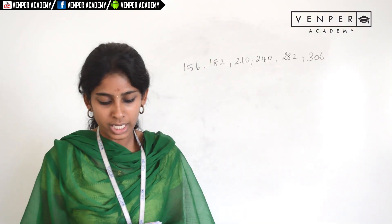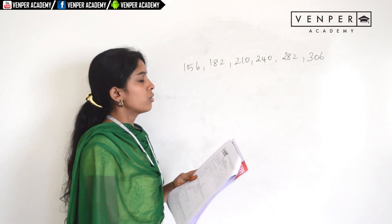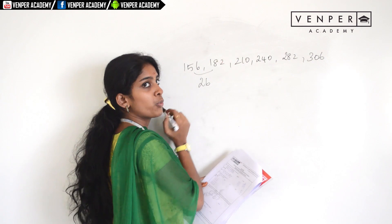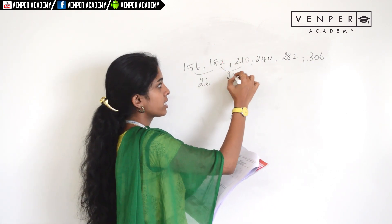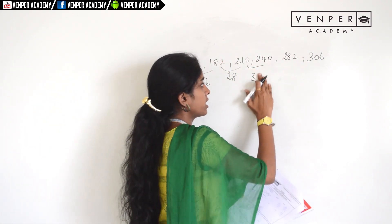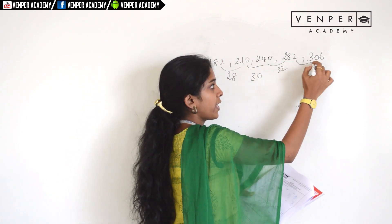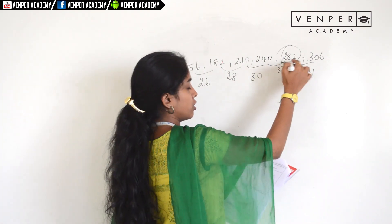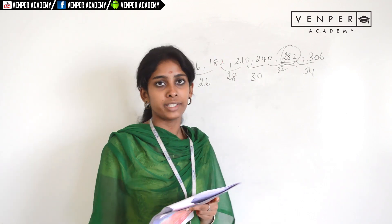Question fifty: identify which number does not fit in the sequence. The differences between consecutive numbers are 26, 28, 30 — increasing by 2 each time — so the next should be 32 and then 34. The number 282 does not fit this pattern. So the answer is option three — 282.